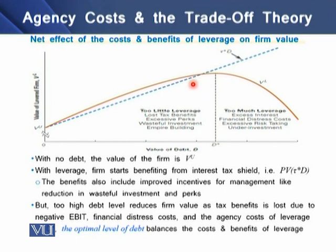But at too high a level of debt, it reduces firm value as the tax benefit is lost due to negative EBIT — that is, earnings before interest and tax — where the interest expense exceeds the earnings before interest and tax of the firm. This also brings in financial distress costs and agency costs of leverage.